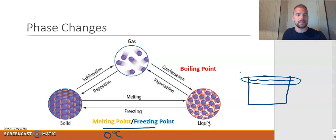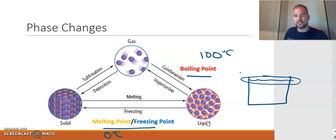If you want to go from gas particles back down to liquid, this is known as condensing or condensation. The temperature at which these things happen is known as the boiling point. Keeping with our water example, water will vaporize at 100 degrees Celsius. Notice there's no such thing as a condensation point — we just call it a boiling point.